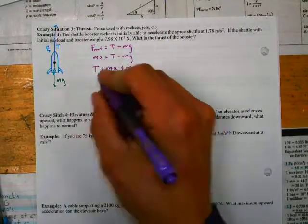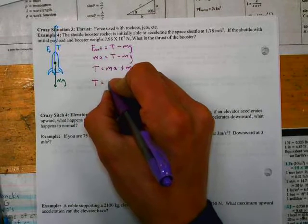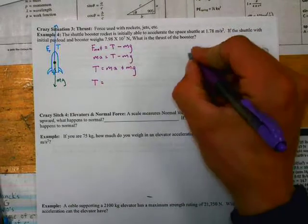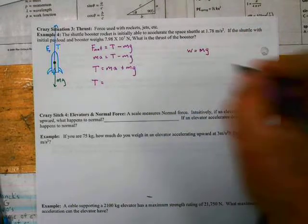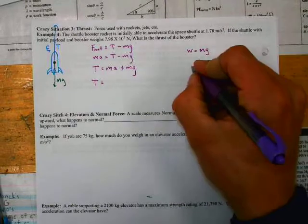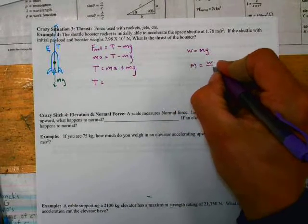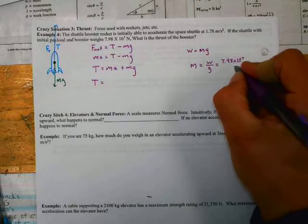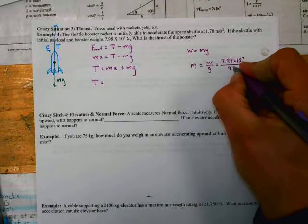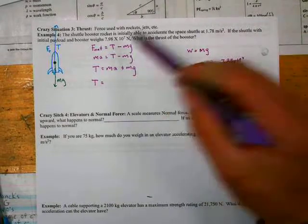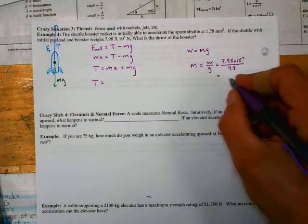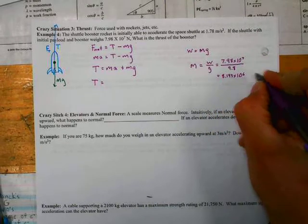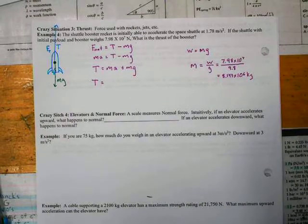And now we're just plugging in numbers and solving. So thrust is equal to the mass times the acceleration. Now, I've got to get the mass over here on the side. So I know that W equals MG. And I've got the weight right there. I want to solve for the mass. So the mass is equal to the weight over little g. Okay, or 7.98 times 10 to the 7th over 9.8. And that will get me the kilograms. This is a really heavy thing. So I get 8.143 times 10 to the 6th. And now I'm in kilograms, so I'll leave a couple extra sig figs there.